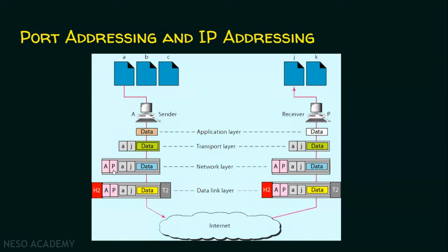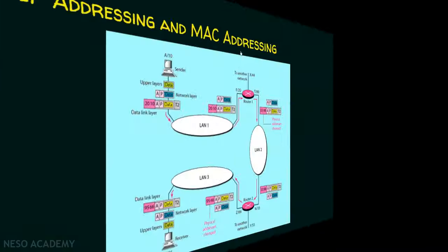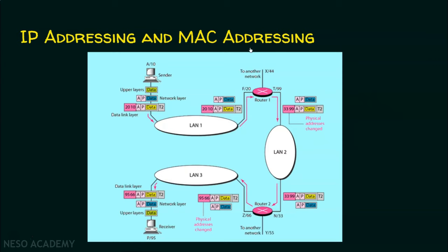Now this example helped us understand port addressing and IP addressing. In the next example, we will see IP addressing and MAC addressing. Suppose this is the sender computer and this is the receiver computer. We are not focusing on port numbers now; we will focus only on IP address and MAC address. Every node will have an IP address and a MAC address.